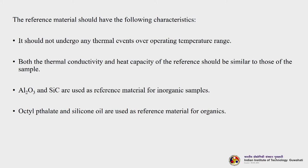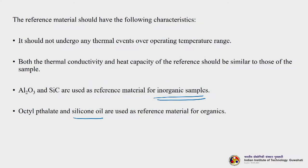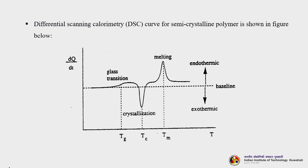The reference material is inert — it should not undergo any thermal events over the operating temperature range, and both its thermal conductivity and heat capacity should be similar to those of the sample. Alumina (Al₂O₃) and silicon carbide (SiC) are used as reference materials for inorganic samples. Octyl phthalate and silicon oil are used for organic samples. Silicon oil and silicon carbide are mostly used as reference materials for organic and inorganic samples respectively.